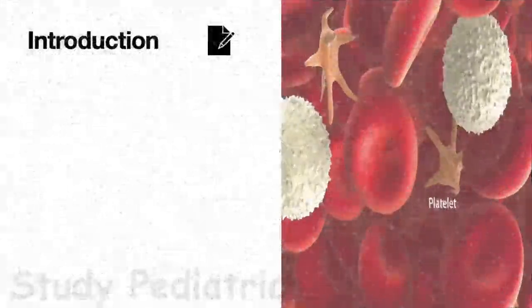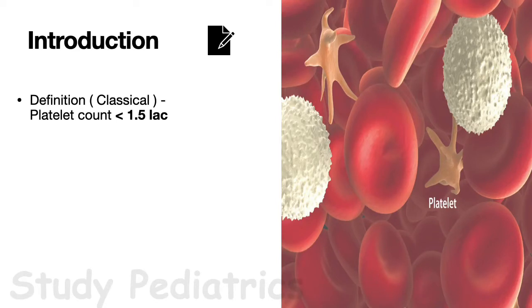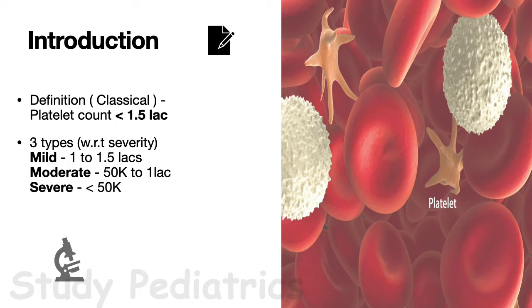Thrombocytopenia in the newborn. The classical definition of thrombocytopenia is a platelet count less than 1.5 lakhs. It is of three types based on severity: mild is 1 to 1.5 lakhs, moderate is 50,000 to 1 lakh, and severe is when platelet count is less than 50,000.